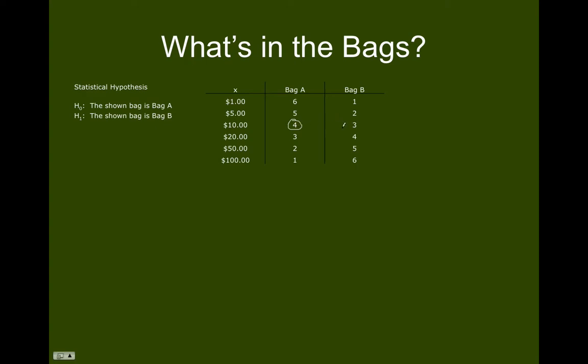So maybe my decision to reject that hypothesis was not such a good decision after all. One of the ideas here is that before I actually pull a bill out of the bag and before I actually gather any data, what I really should do is create a framework for the decision. And the way we do that is we create something called a decision rule.